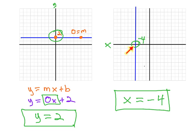This vertical line has an x-intercept of negative 4, so the equation is x equals negative 4. The horizontal line has a y-intercept of 2, so y equals 2 becomes the equation.